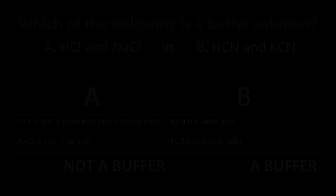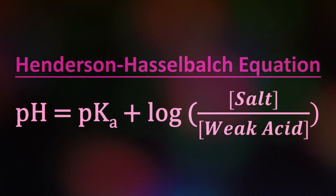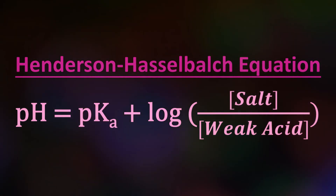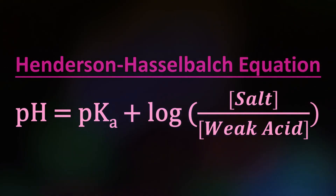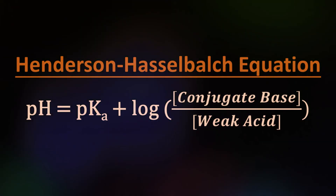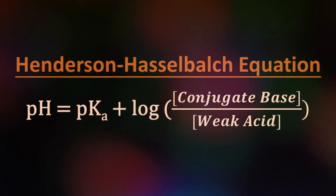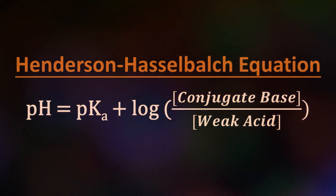Let's look at the equation we can use to calculate the pH of a buffer. We will use the Henderson-Hasselbalch equation. The equation is: pH equals pKa plus log of the concentration of salt divided by the concentration of weak acid, or pH equals pKa plus log of the concentration of conjugate base divided by the concentration of weak acid.